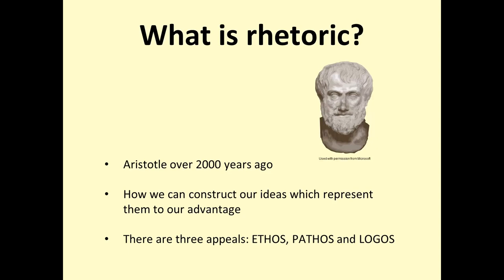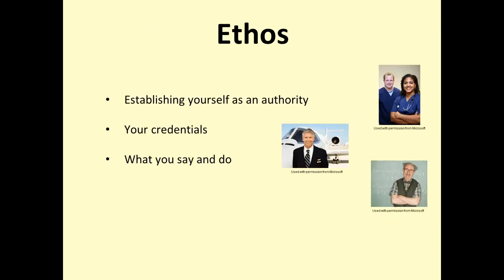There are three appeals of rhetoric: Ethos, Pathos and Logos. Ethos is establishing yourself as an authority. This could be through your credentials — so if you're a doctor, a pilot or a professor you'll have the authority to speak about certain topics. You listen to your tutors because they have doctor or professor in front of their name; this is their title which provides them with the credentials to talk authoritatively about their subject. It's also about establishing yourself as an authority through what you say and do — so how you dress, the type of terminology you use and your confidence in what you're saying.